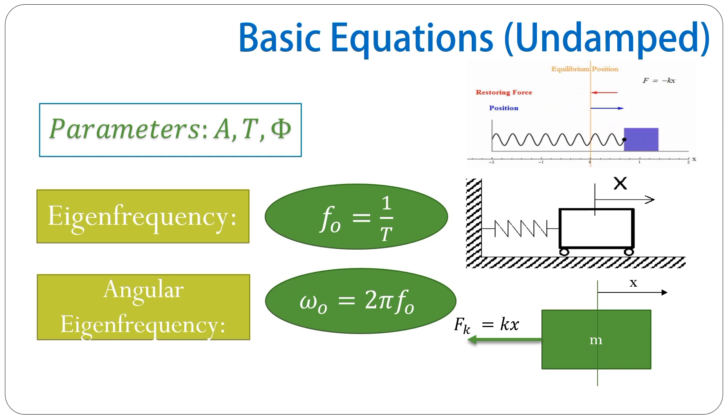And from this eigenfrequency, by multiplying it with two times pi, we can also determine the so-called angular eigenfrequency, the one that we need here in order to then also be able to compute the solution x of t for any given time t.